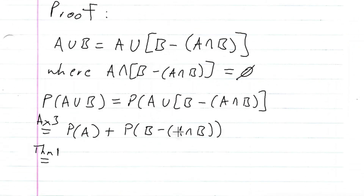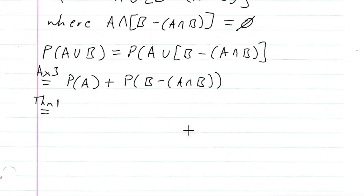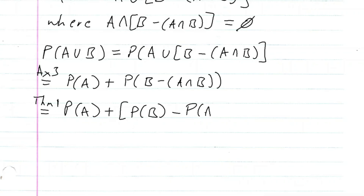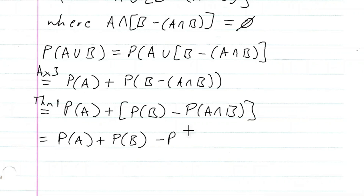By Theorem 1, since we have all of B minus a subset A∩B, the probability of (B minus A∩B) equals the probability of B minus the probability of A∩B. Therefore, P(A∪B) equals the probability of A plus the probability of B minus the probability of A intersection B. That completes our proof.